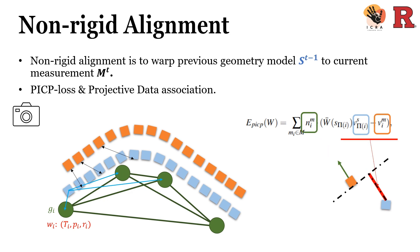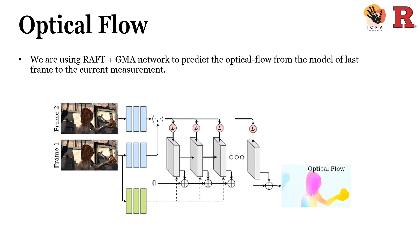N_M is the normal of current measurement. This whole term reflects the distance between the point in previous geometry and its corresponding measurement plane. When we optimize this term, the surface of previous geometry S will be dragged to the current measurement plane M.